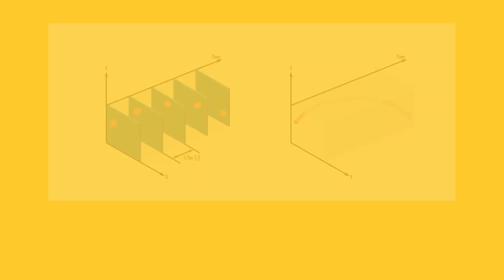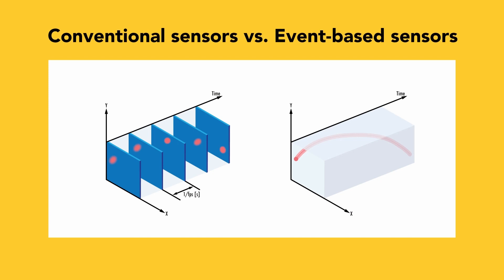Another sensor trend is event-based machine vision, also known as neuromorphic imaging. Here we're not imaging the entire field of view at once — instead we're just looking for changes in the intensity of a pixel. So if someone freezes and doesn't move at all, it's not recording anything until movement starts again. This technique greatly improves system speed, temporal resolution, and dynamic range. It's very useful in robotics, autonomous vehicles, and other situations where recording a change is the most important thing.